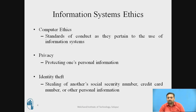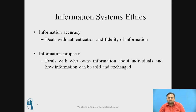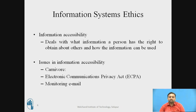In the case of identity theft, what happens is the stealing of another's social security number, credit card number, or personal information. Information accuracy deals with the authentication and fidelity of information. Information property deals with ownership of information about the individual and how information can be sold or exchanged — only the legal owner has the access and privilege to handle this.